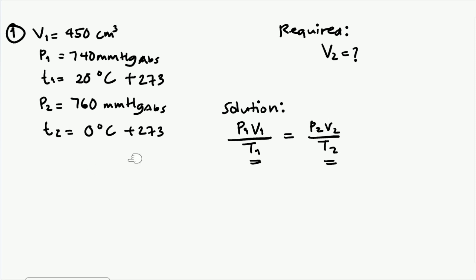So P1 is 740, we won't include units since they'll automatically cancel. 740 times volume at point one which is 450, divided by T1, which is now 293 kelvin, equals 760 times V2, the unknown, over T2 which is 273. So if you solve this...